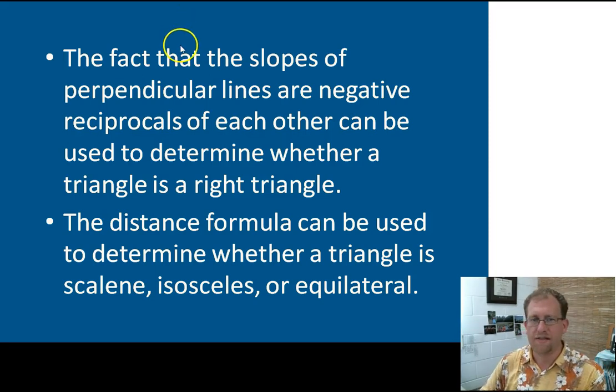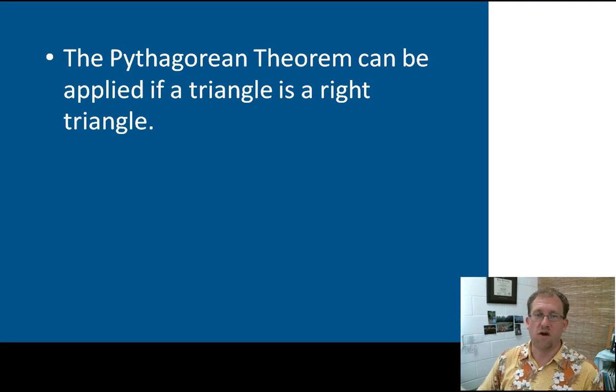You can look at the distance between two points. If you determine that the triangle is, in fact, a right triangle, then you can use the Pythagorean theorem to determine any missing leg lengths. Or, of course, you can always use the distance formula for that purpose as well. Triangles on our Cartesian system is what we're working on here.